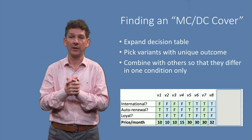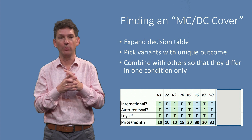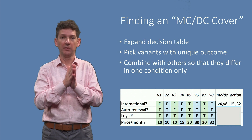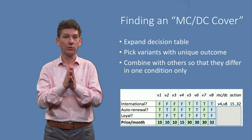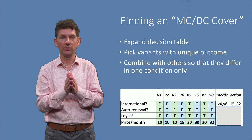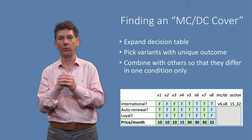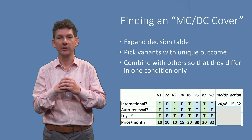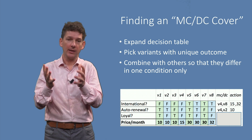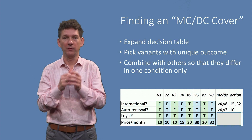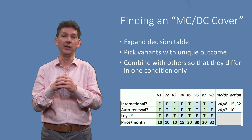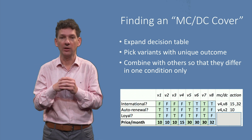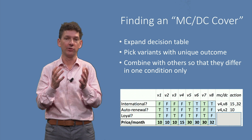Here we have expanded the don't care values and have added names v1 to v8 to the variants to make it easier to talk about them. As a first test case, let's make all conditions false, which is v4, with outcome 15. If we then flip the first condition, we arrive at variant v8, with outcome 32. Thus v8 and v4 together verify that the first condition independently determines the outcome. Next, let's start again from v4, but now flip the second condition. This brings us to v2, with outcome 10. Thus v4 and v2 together verify that the second condition independently determines the outcome.